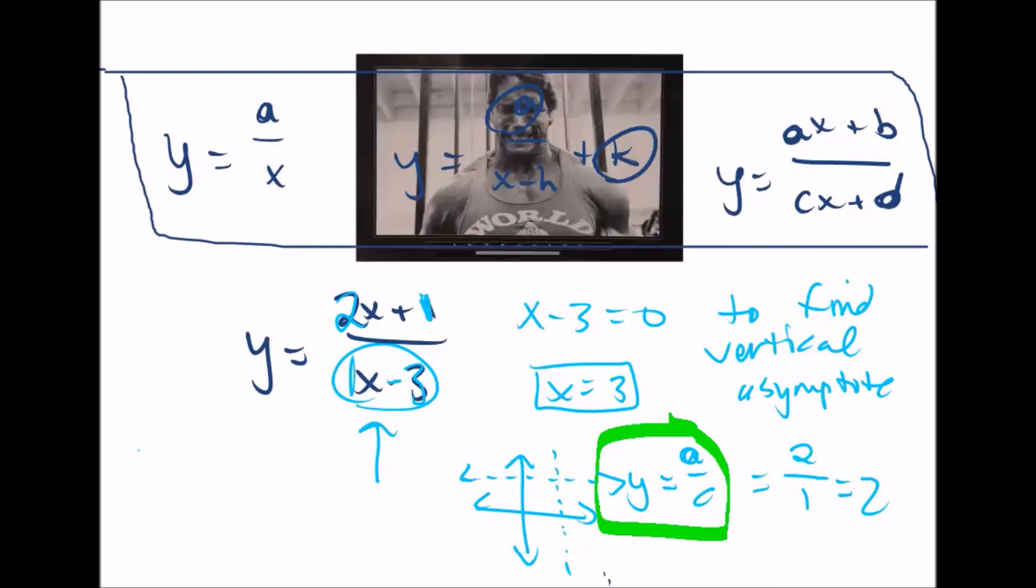So our new asymptotes are x equals 3. Sorry, I'm all over the place. And y equals 2. Those are the new asymptotes. Those lines which this graph is not allowed to cross.